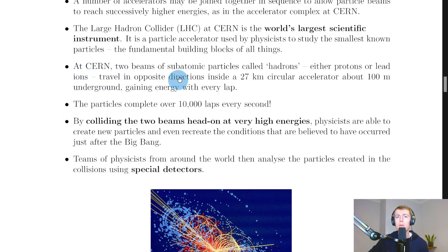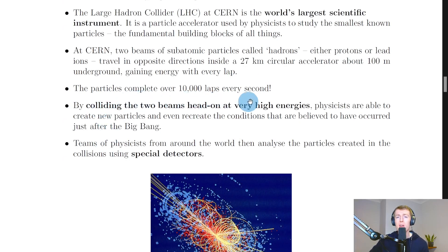At CERN, two beams of subatomic particles called hadrons, either protons or lead ions, travel in opposite directions inside a 27 km circular accelerator about 100 m underground, gaining energy with every lap. The particles complete over 10,000 laps every second, which is pretty impressive.